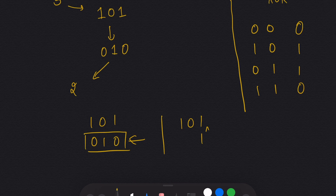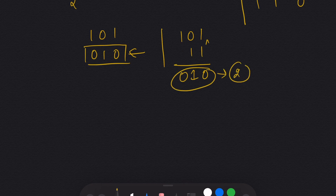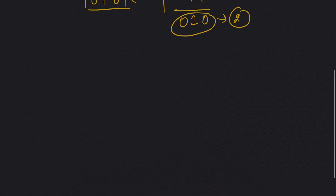So by XORing each bit with 1: 1 XOR 1 gives 0, 0 XOR 1 gives 1, 1 XOR 1 gives 0 — and we end up with 0 1 0 which is 2, and we can return it. So we define a variable bit equal to 1 and take XOR of num with bit.